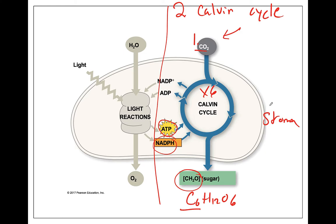Do you need light to do the Calvin cycle? The light is only needed for the light reactions. Plants are fully capable of doing the Calvin cycle when there is no light, as long as they have carbon dioxide, ATP, and NADPH.